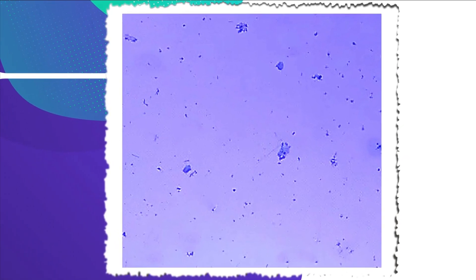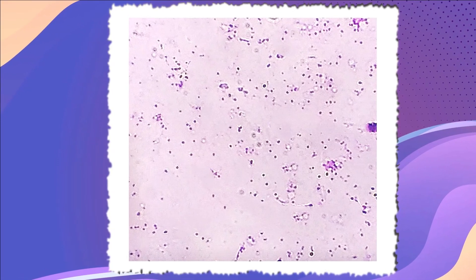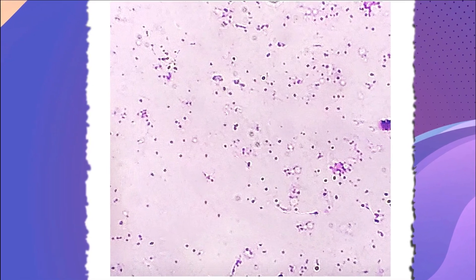We already observed our plant cells under the microscope before. Now let's see how animal cells look like under the microscope. This is cheek cell under the microscope at 40 times magnification. This is cheek cell under the microscope at 100 times magnification. This is how bacteria looks like under the microscope at 400 times magnification. The bacteria is circular shape and it is stained in purple.